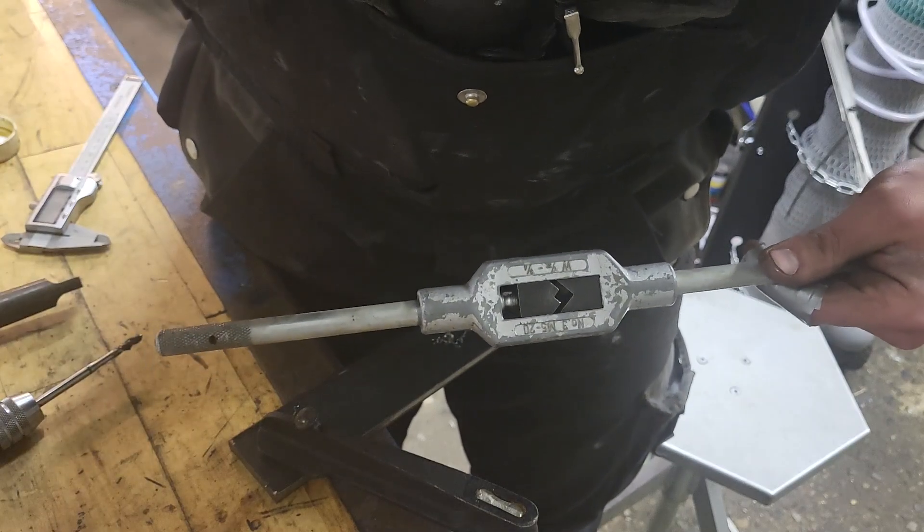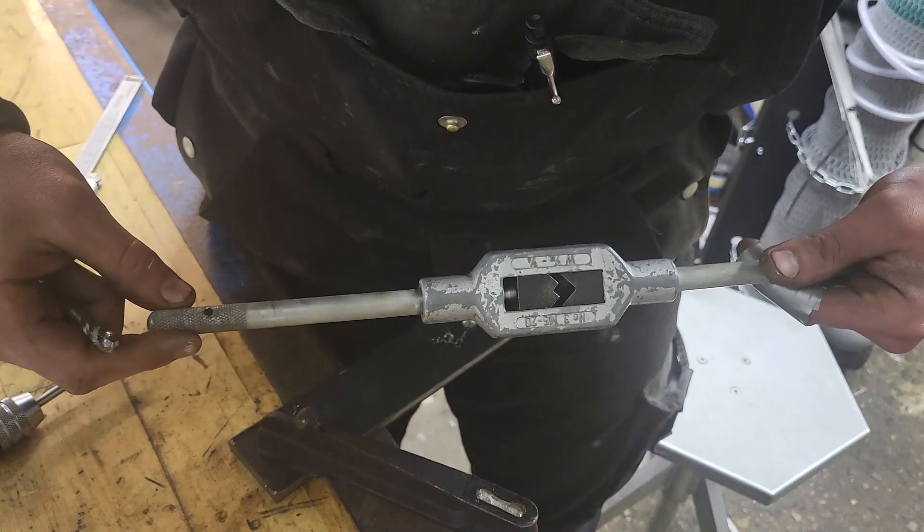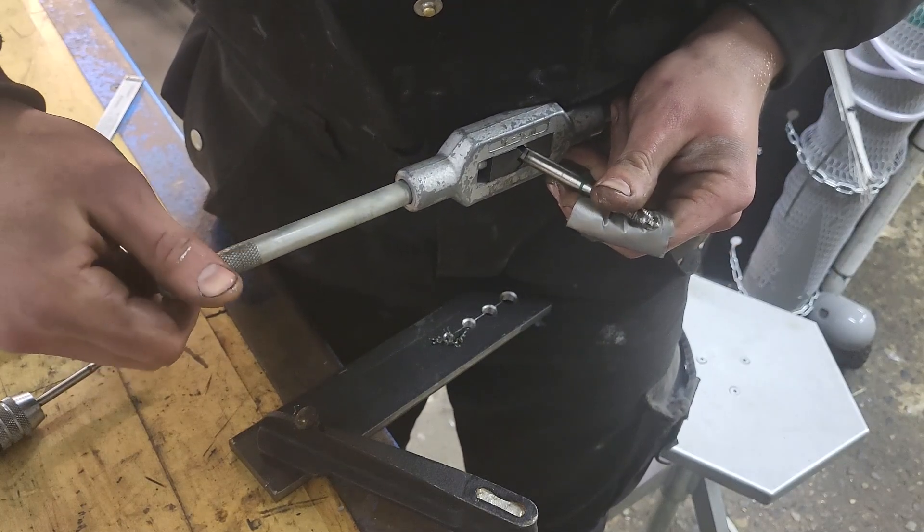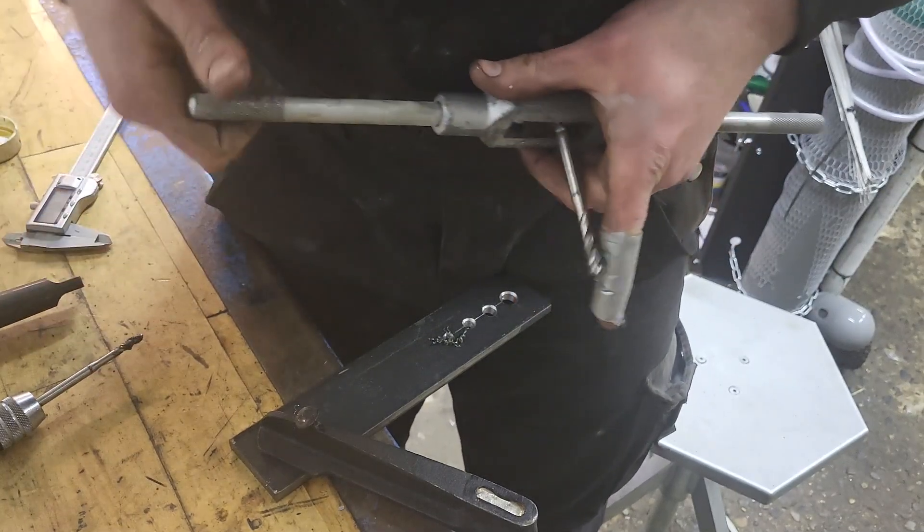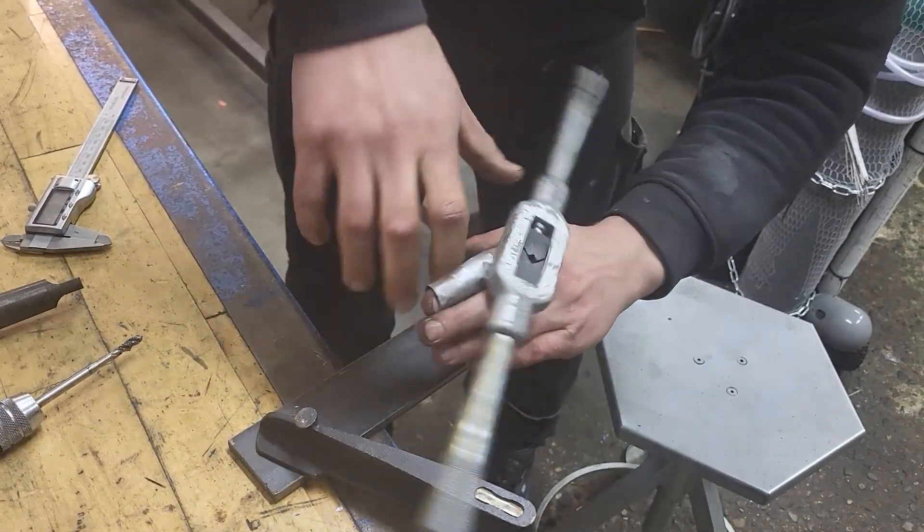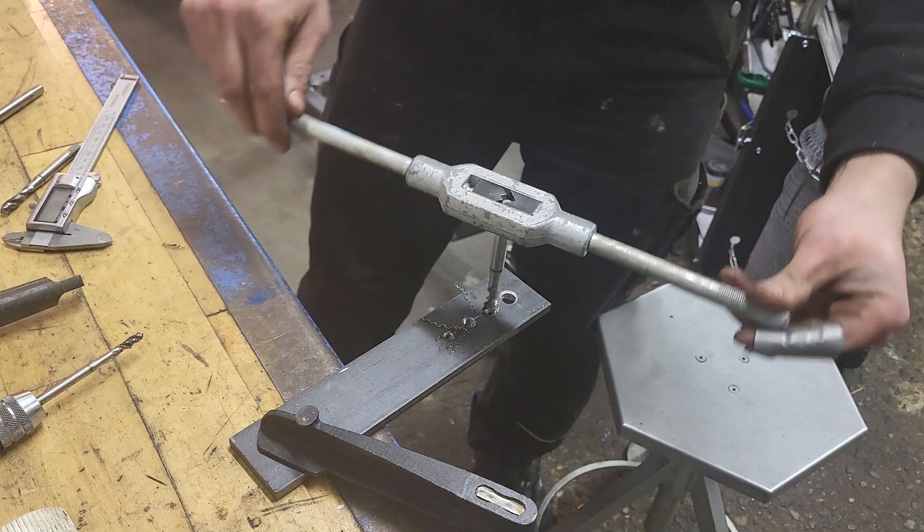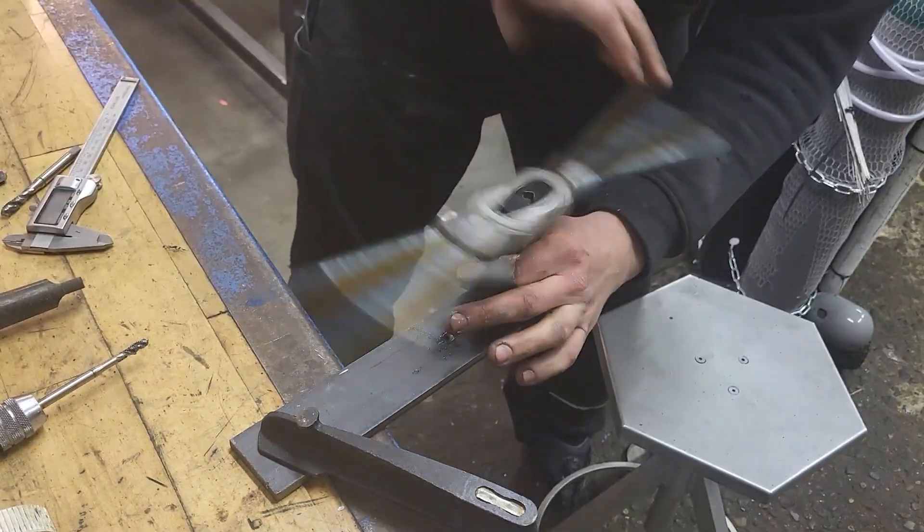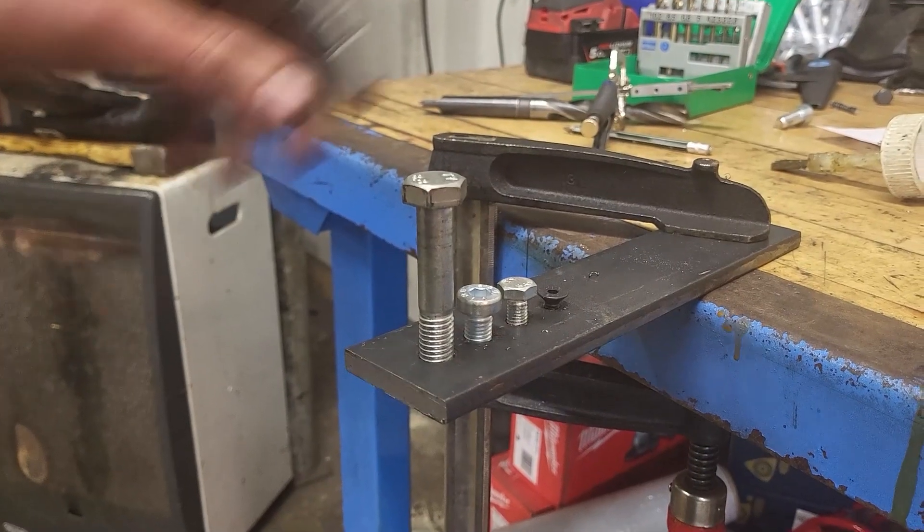Now for the bigger taps, I'll be using this more simplistic winding iron. Just place your tap into the key slot and apply grease. This seems to have been a success.